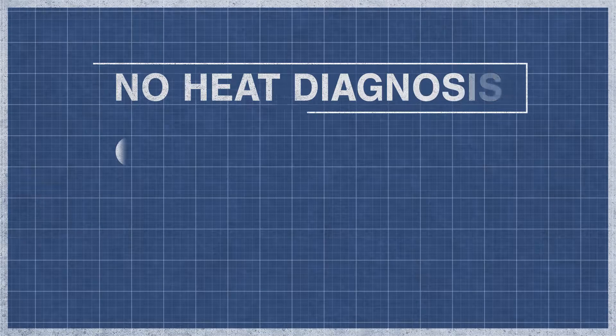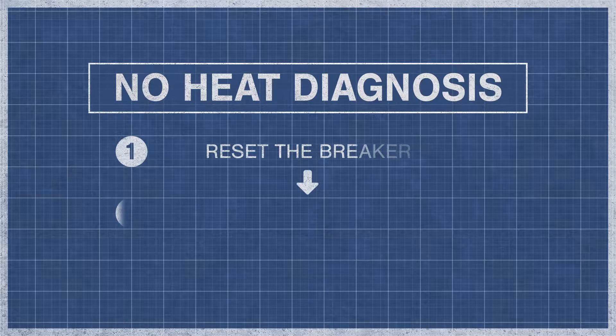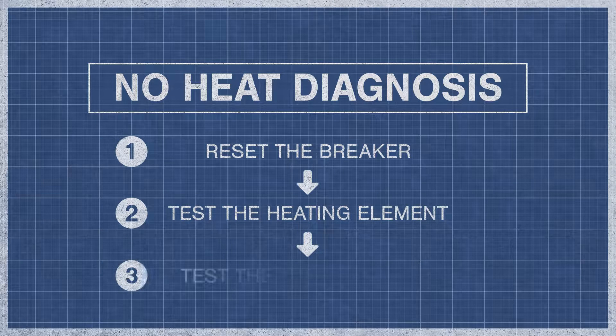When a dryer fails to produce heat, it is best to eliminate the potential problems step by step. For an in-depth guide, watch the videos below.